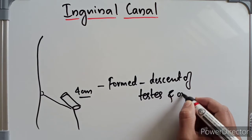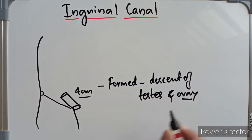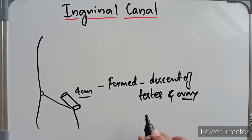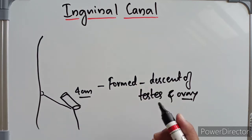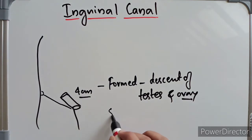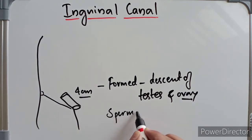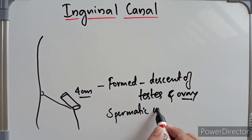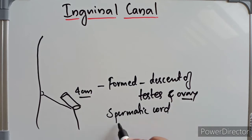The main contents of the inguinal canal are the spermatic cord in the male and the round ligament in the female.